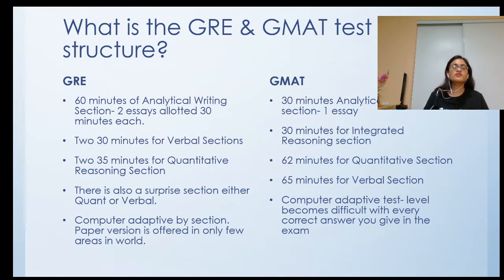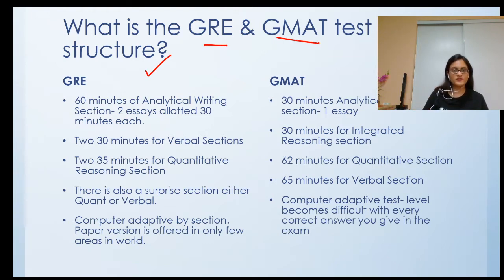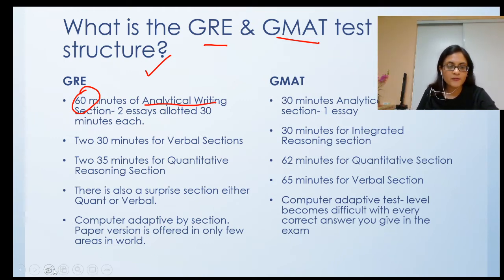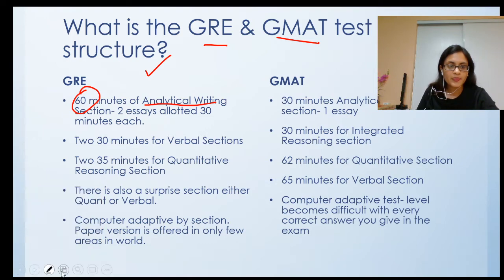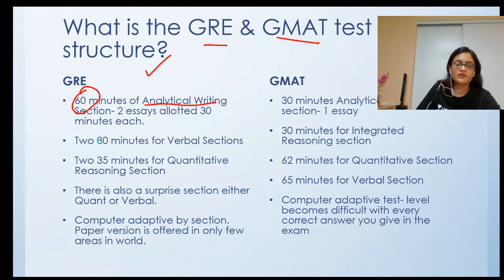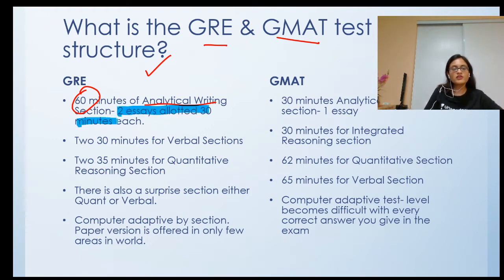What is the test structure for GRE and GMAT, and what's the difference? For GRE, you are given 60 minutes for analytical writing, in which you have to write two essays, 30 minutes each.